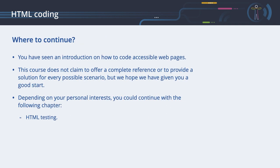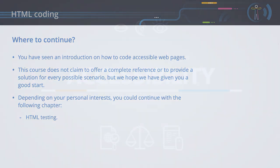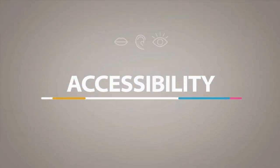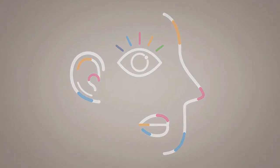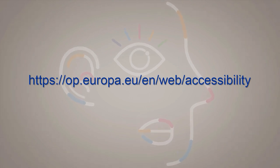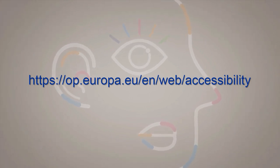Where to continue? You have seen an introduction on how to code accessible web pages. This course does not claim to offer a complete reference or a solution for every possible scenario, but we hope we have given you a good start. Depending on your personal interests, you could continue with the HTML Testing chapter. For more information, visit op.europa.eu/en/web/accessibility.